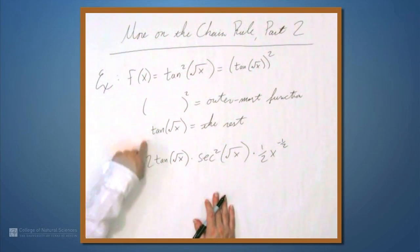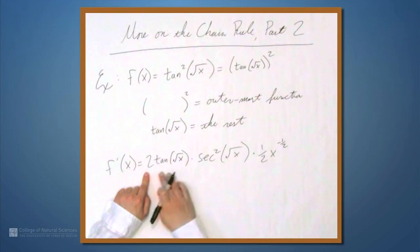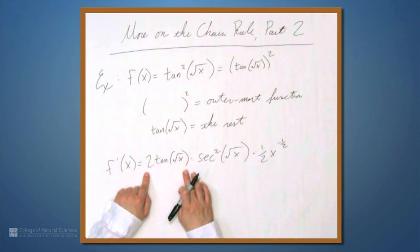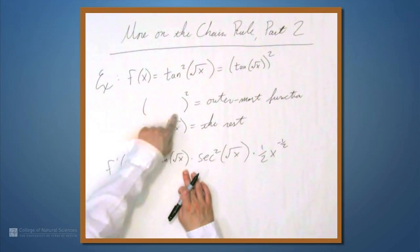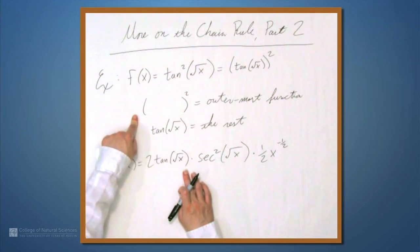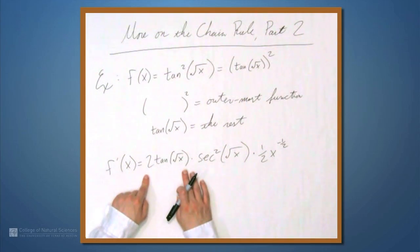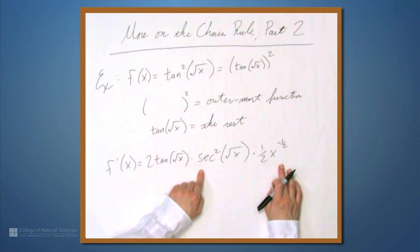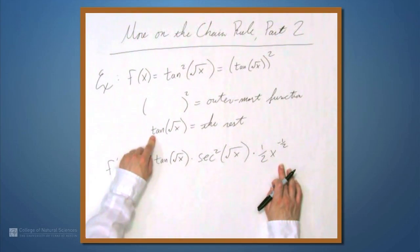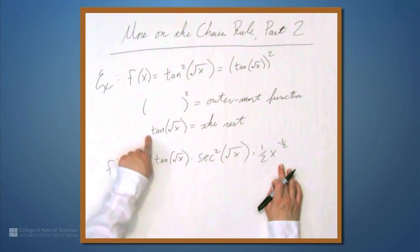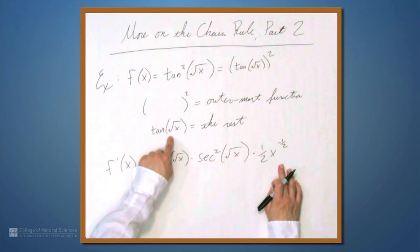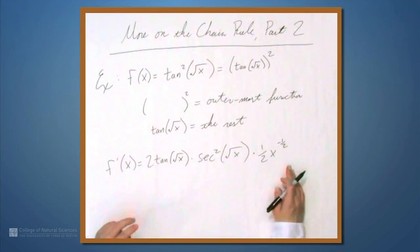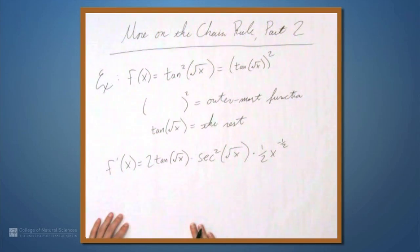Let's just look at this again. The first part came from our first application of the chain rule — we took the derivative of something squared and got 2 times tangent of square root of x. The part from secant squared all the way to the end came from the derivative of the rest — the derivative of tangent of square root of x. So that was two applications of the chain rule. Let's look at one more example.